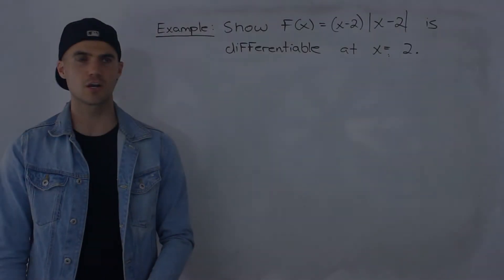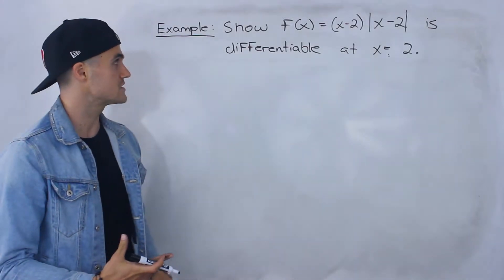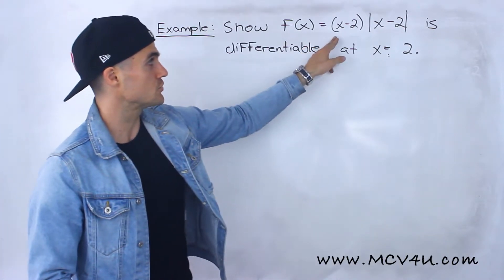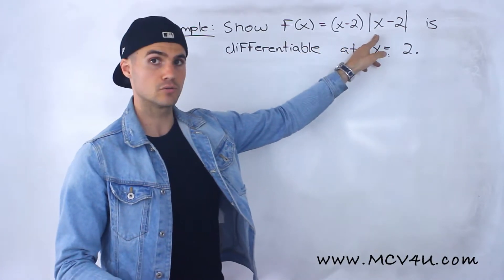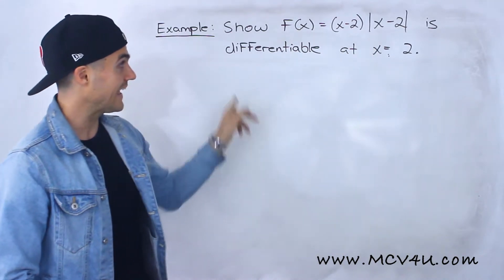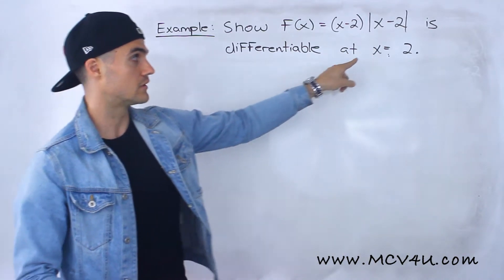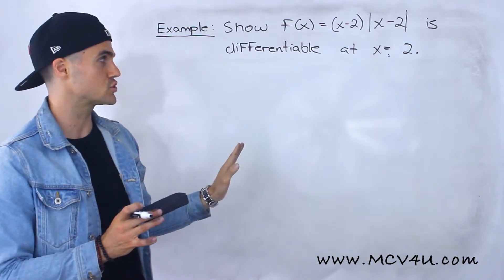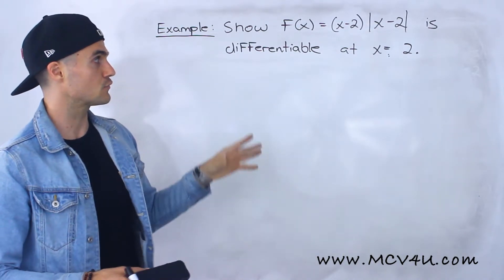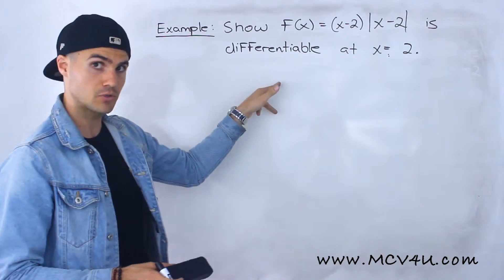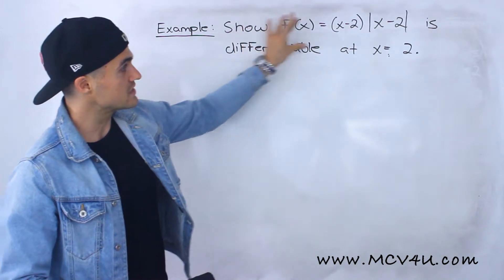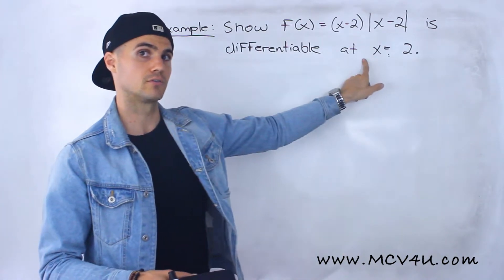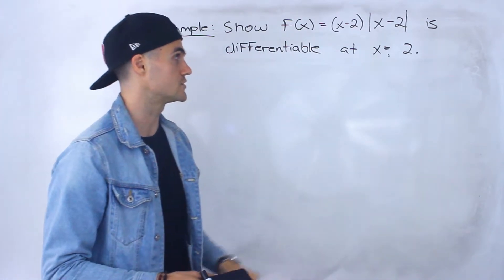What's up everyone? Welcome back. Patrick here. Moving on to another example dealing with differentiability. We have to show that this function x minus 2 times the absolute value of x minus 2 is differentiable at this x value of 2.